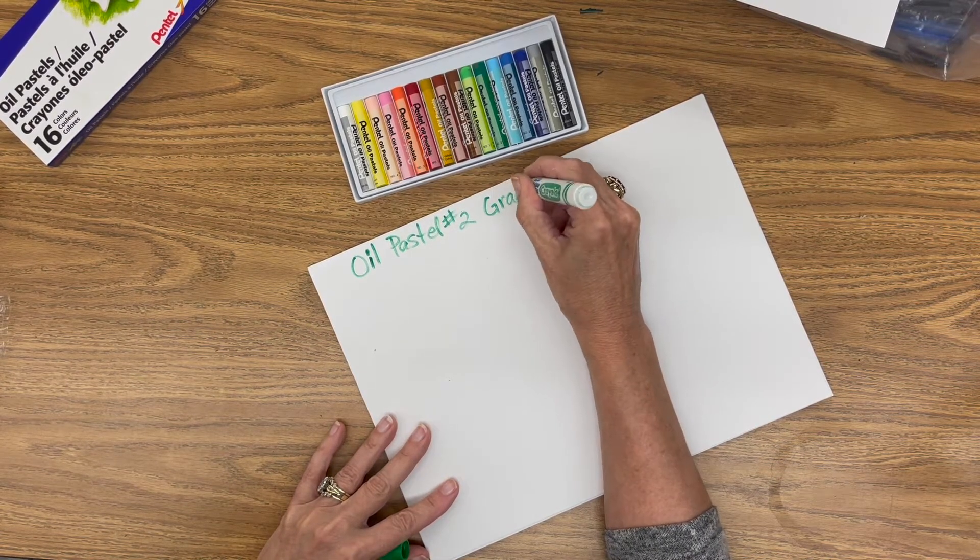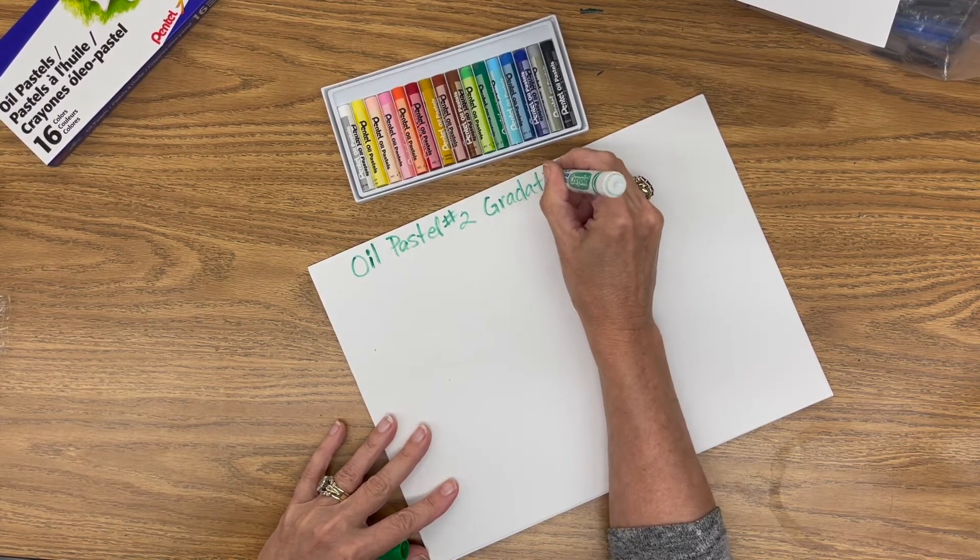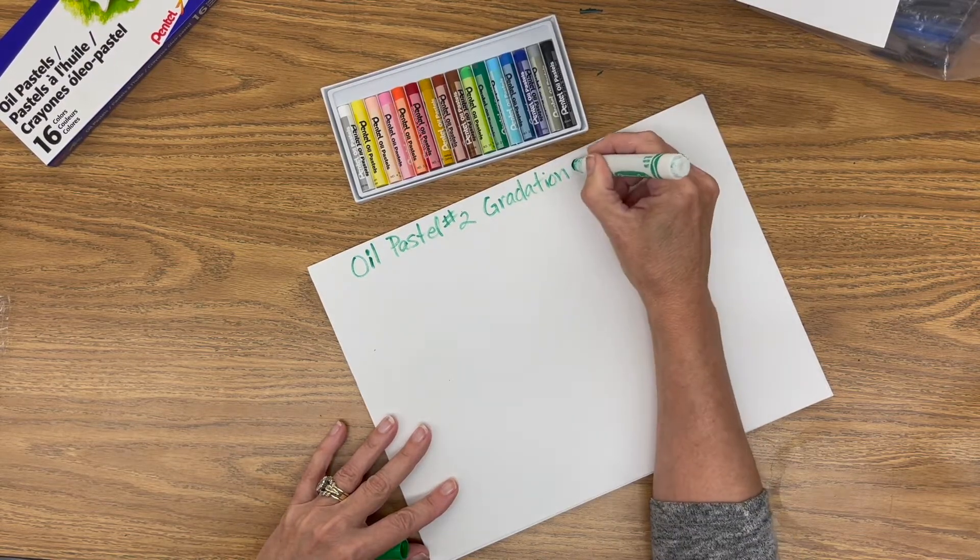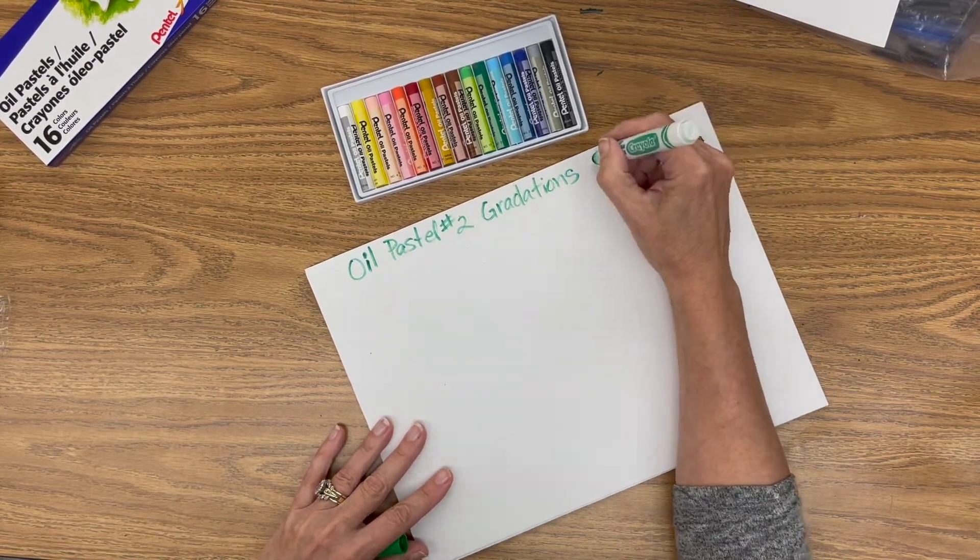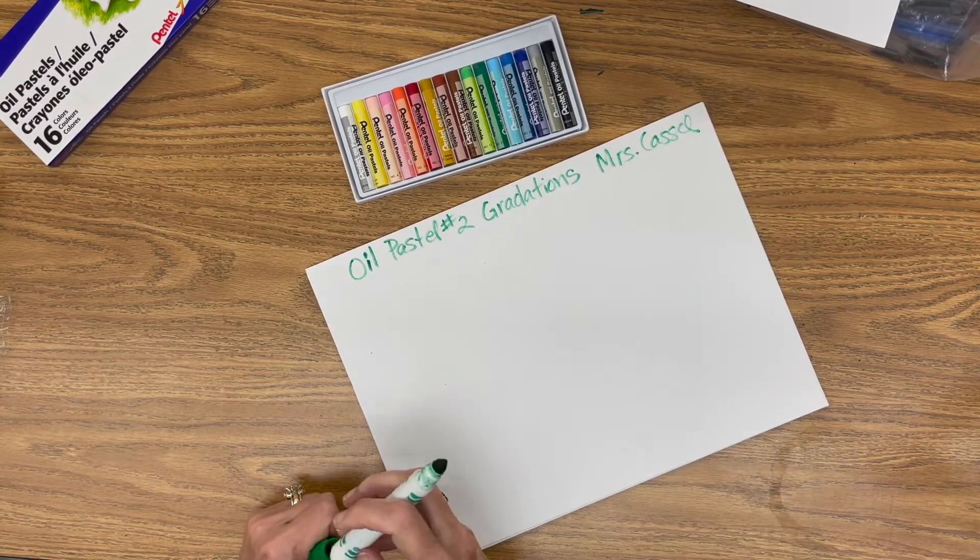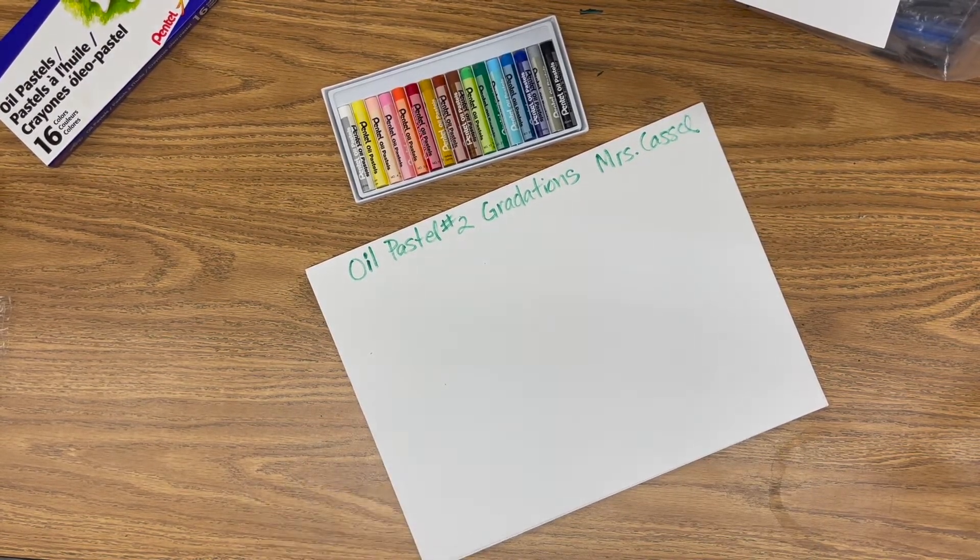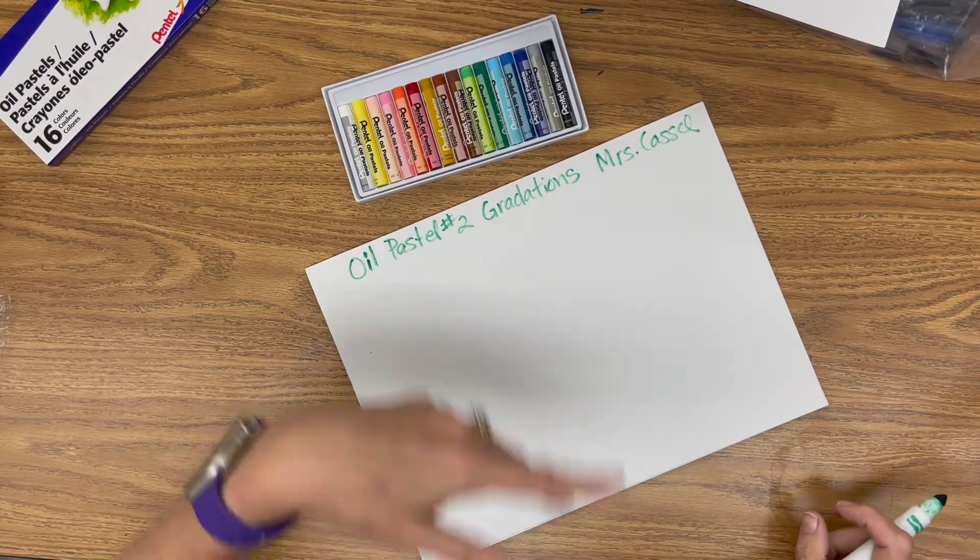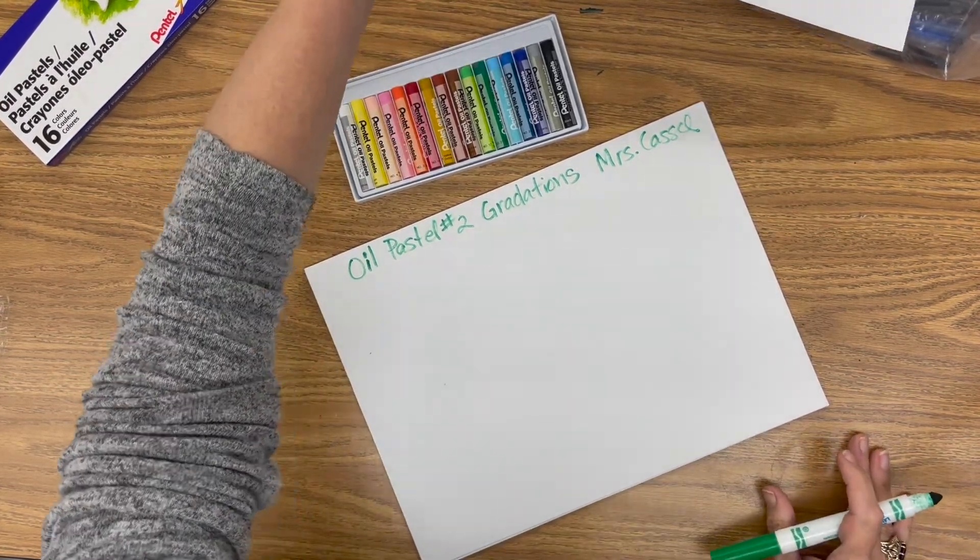We are going to make gradations. If you did the colored pencil one then you kind of have an idea. Put your name on your paper. I know you are going to take a picture and upload it but just put your name on it. All good artists claim their work.